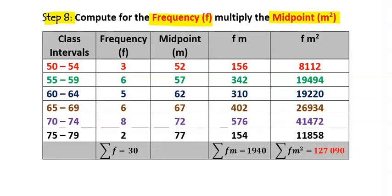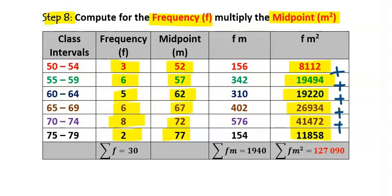Step eight: compute frequency times midpoint squared (fm²). Square 52 and multiply by 3 to get 8112. Square 57 and multiply by 6 to get 9747. Square and multiply each midpoint by its frequency. Fill in the fm² column and sum all rows to get a total of 127,090.